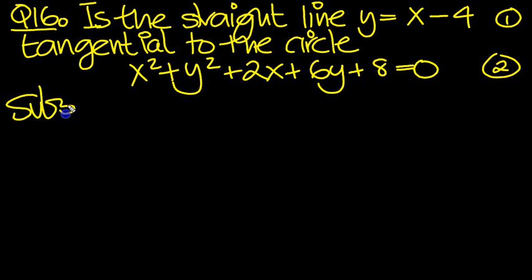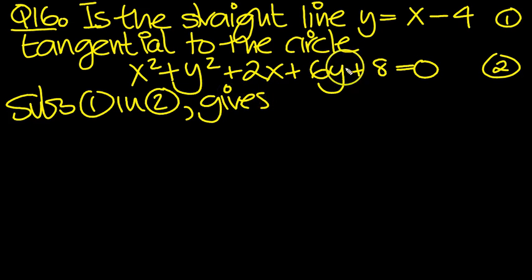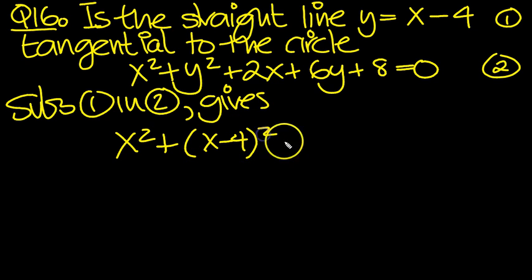So let's substitute 1 into 2 then and see what we get. So x minus 4 goes into this equation: x squared plus x minus 4,